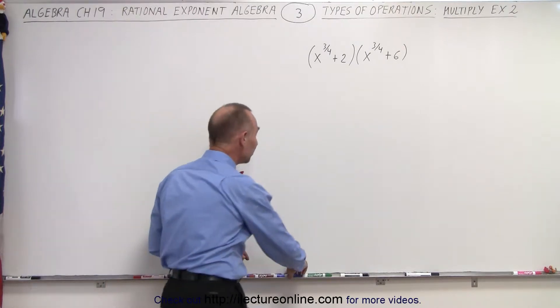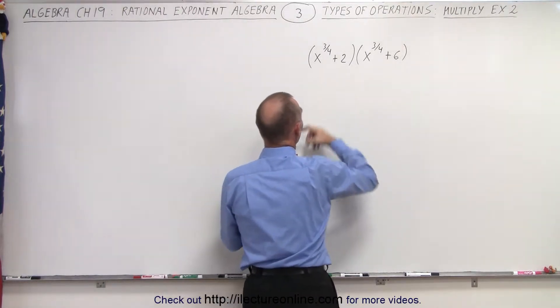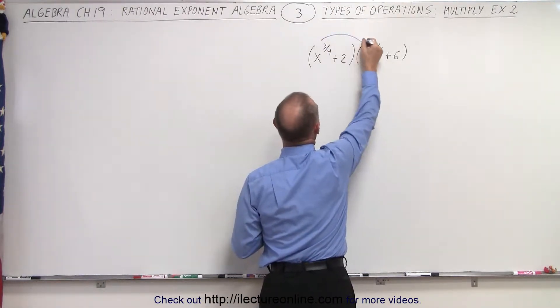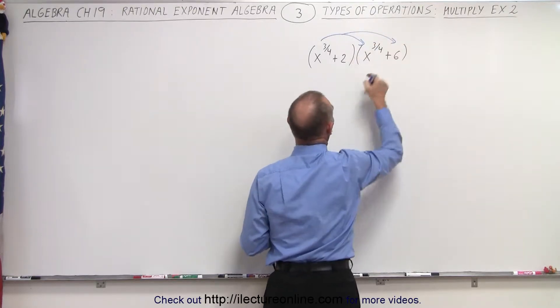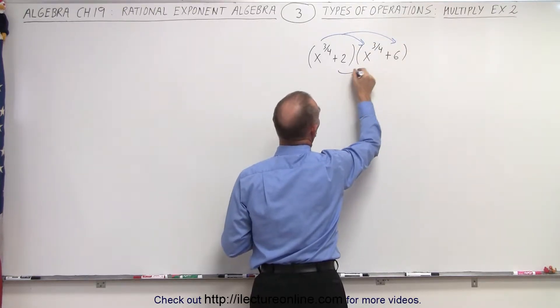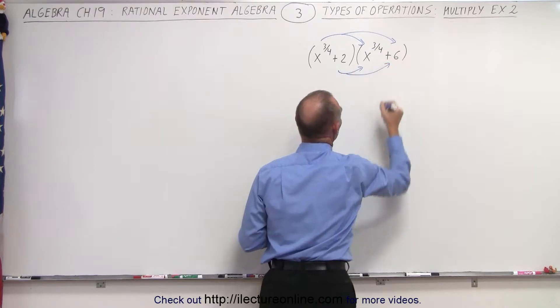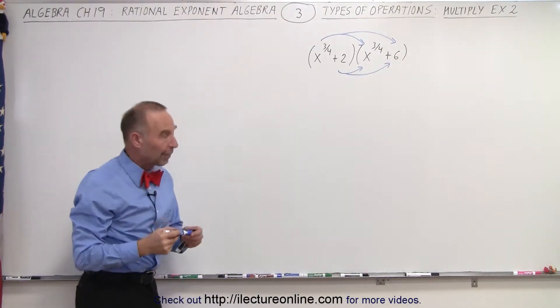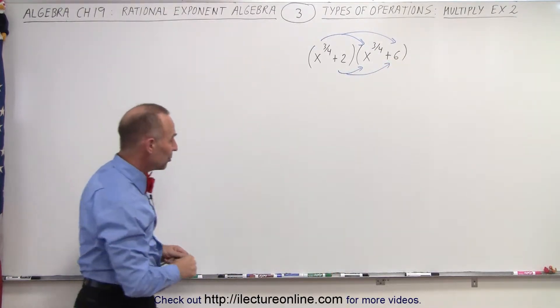But how do we multiply binomials? We take the first term of the first binomial and multiply times the two terms in the second binomial. Then we take a second term and multiply by each of the two terms in the second binomial. Let's do that and see what we get.